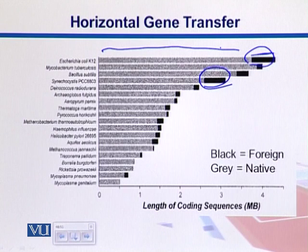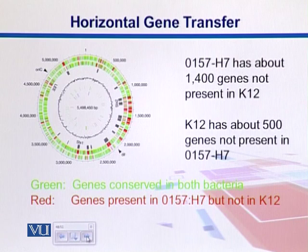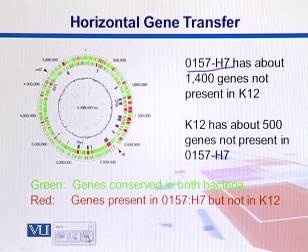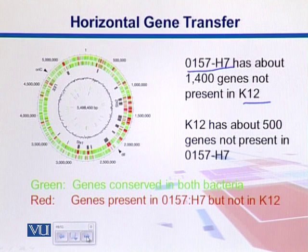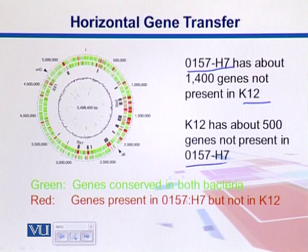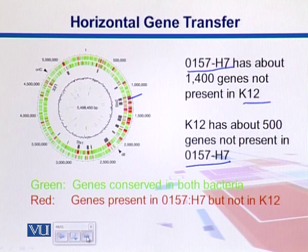Here is another case with a comparative map of two genomes: E. coli O157H7 and K12. We see that there are about 1400 genes present in H7 which are not present in K12, and 500 genes in K12 which are not present in H7. In this circular arrangement, the red color indicates genes present in H7 but not in K12, and green indicates genes conserved in both organisms.